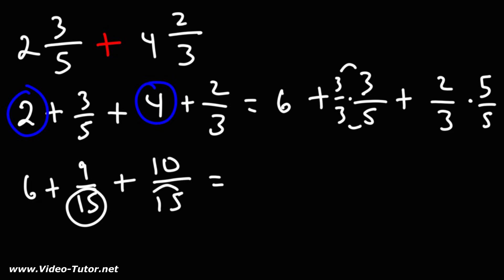So now that the denominators are the same we could add the numerators of the two fractions. 9 plus 10 is 19. So we have 6 plus 19 over 15.